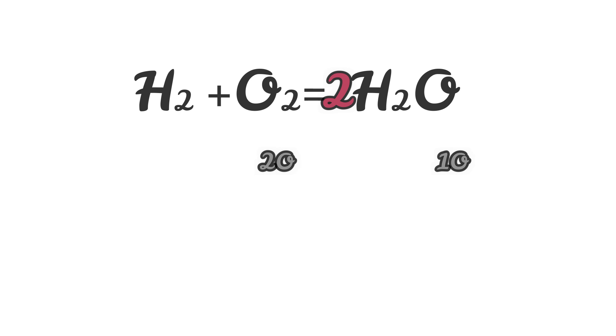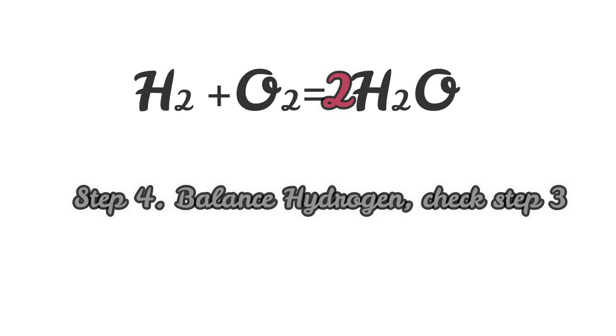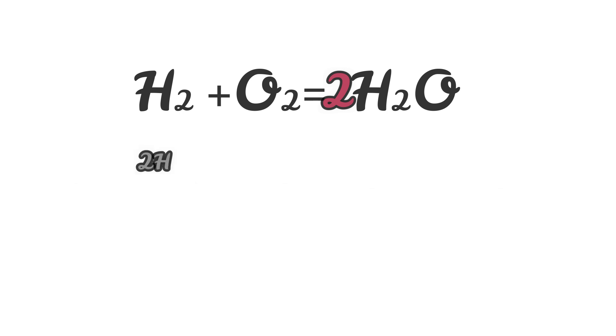After step three, let's move on to step four. Reactants have two H atoms while products contain 2H2, or four hydrogen atoms. So we must put two in front of H2, and the equation is balanced.